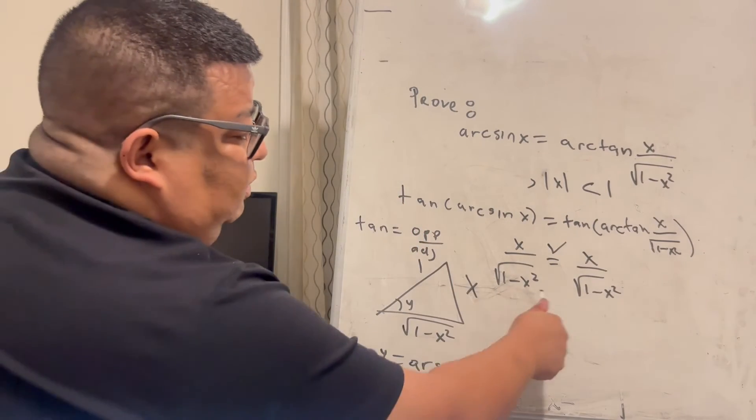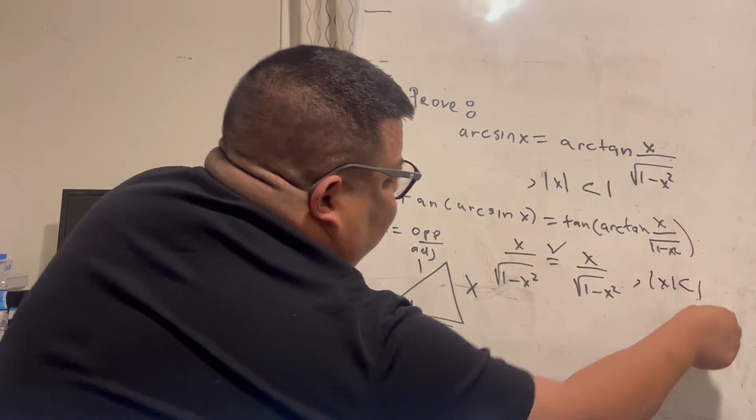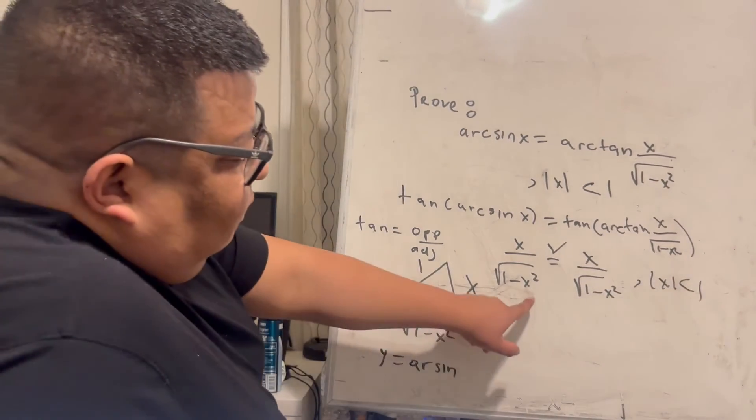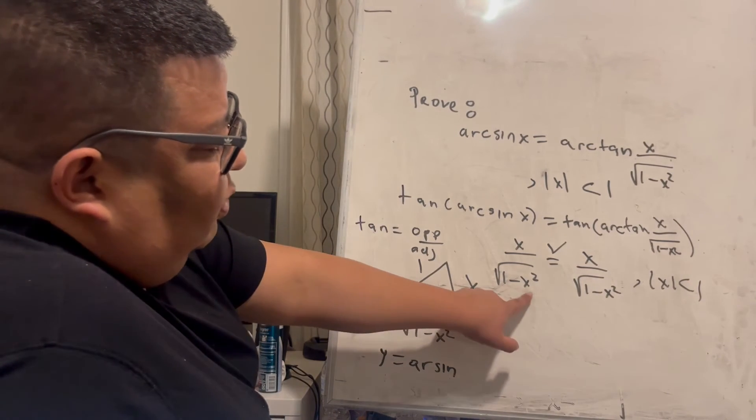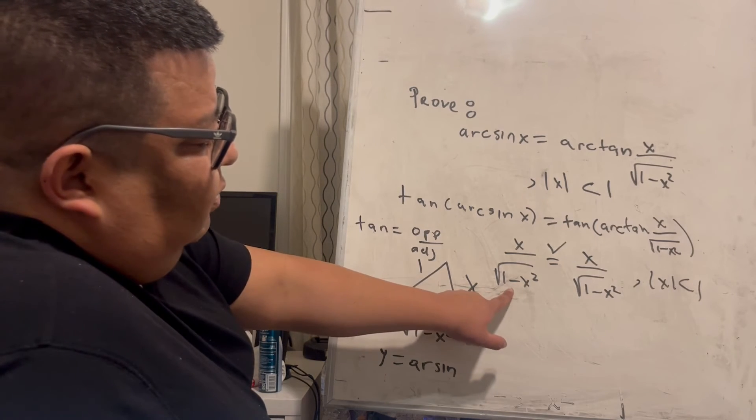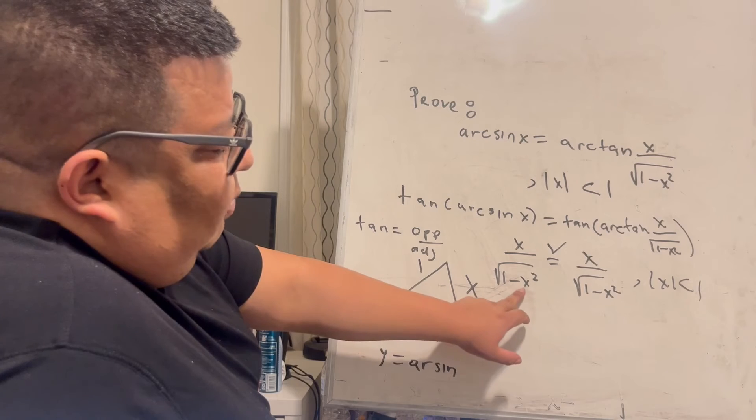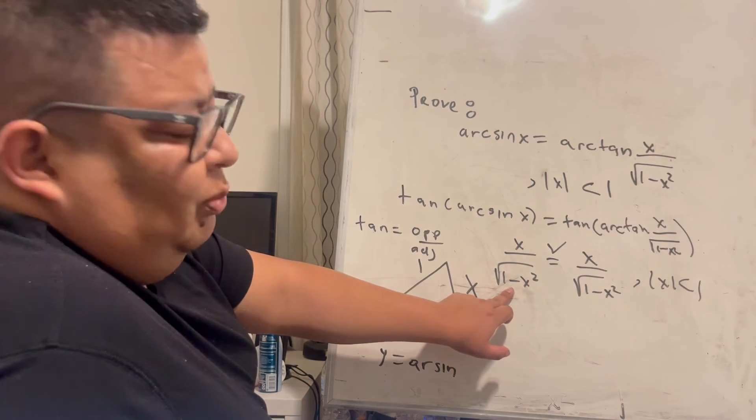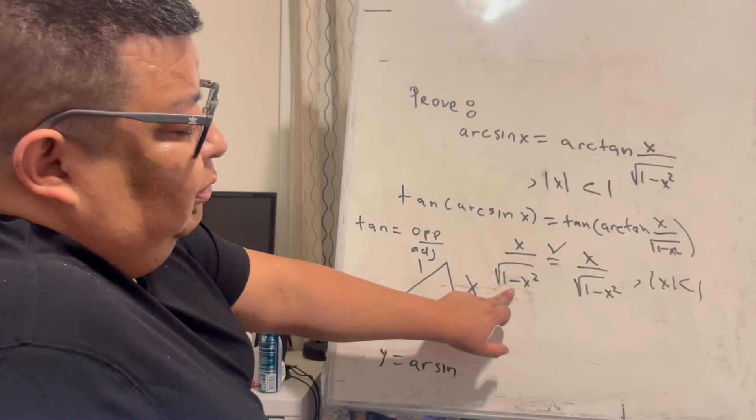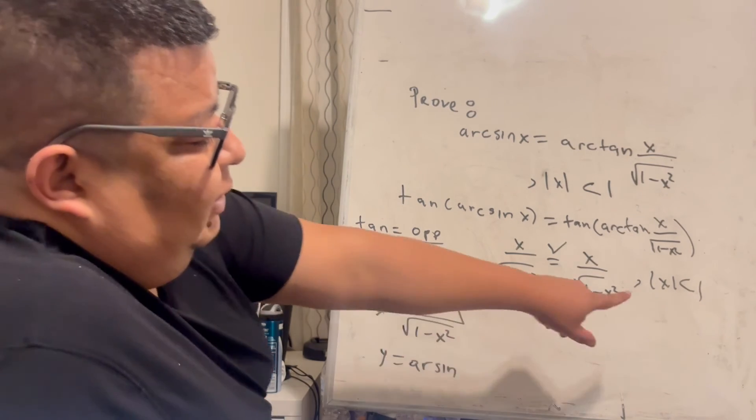I get the same, but remember this: x has to be less than 1. Yes, because notice if I plug in 1 here, I'm going to get 1 minus 1, and I'm going to get 0 on the bottom, so I don't want that. And anything above 1, I'm going to get a negative number. Remember, we cannot take the square root of negative numbers on the reals, so we have to keep it like that.